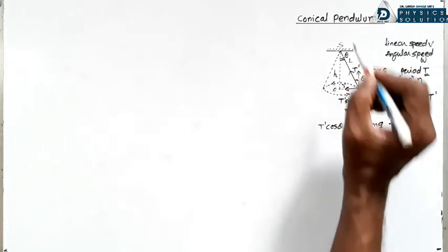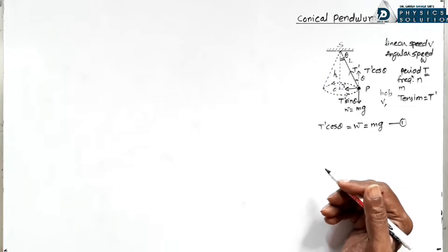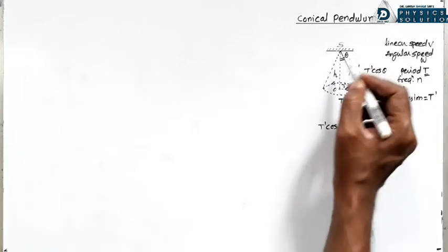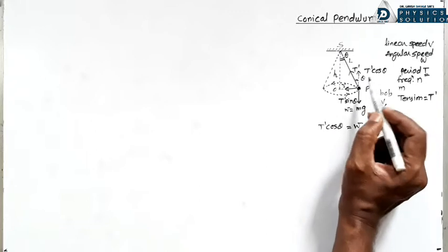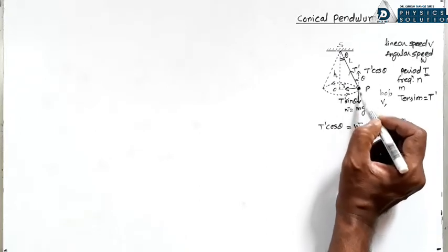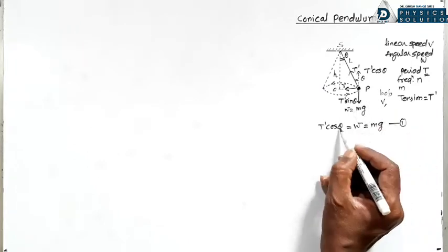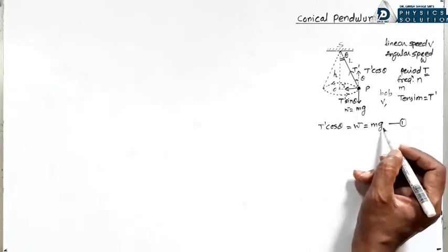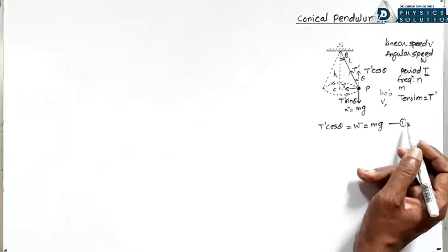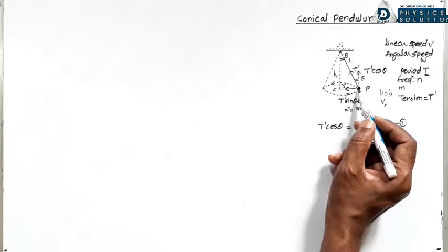So first, the resolution is complete. The physical quantities we need to find step by step are: linear speed v, angular speed omega, periodic time T, frequency, and tension T' produced in the string. Now, the vertically upward component T' cos theta exactly balances the weight of the bob.